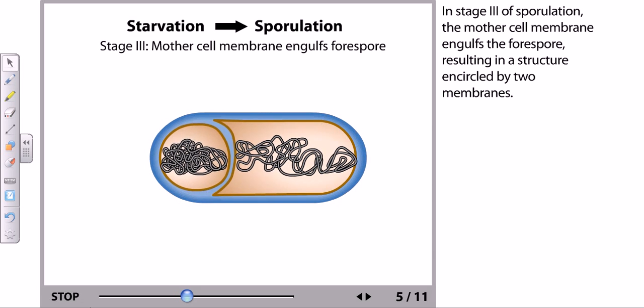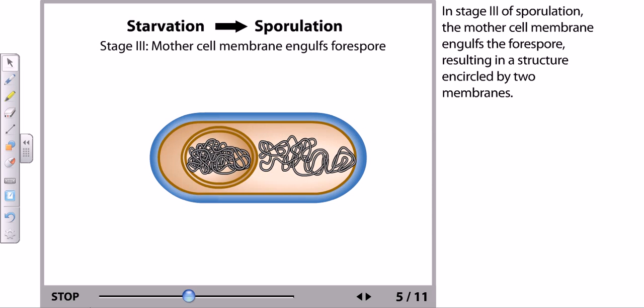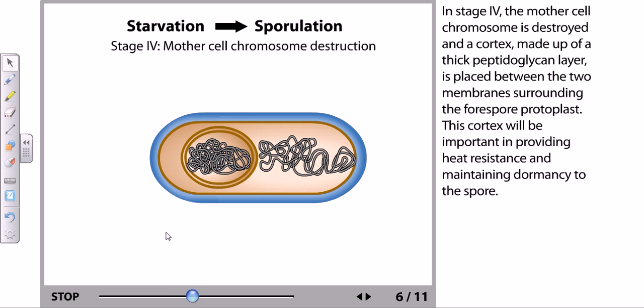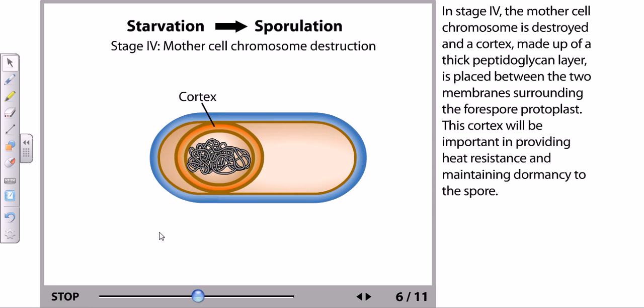In stage 3 of sporulation, the mother cell membrane engulfs the forespore, resulting in a structure encircled by two membranes. In stage 4, the mother cell chromosome is destroyed and a cortex made up of a thick peptidoglycan layer is placed between the two membranes surrounding the spore protoplast.